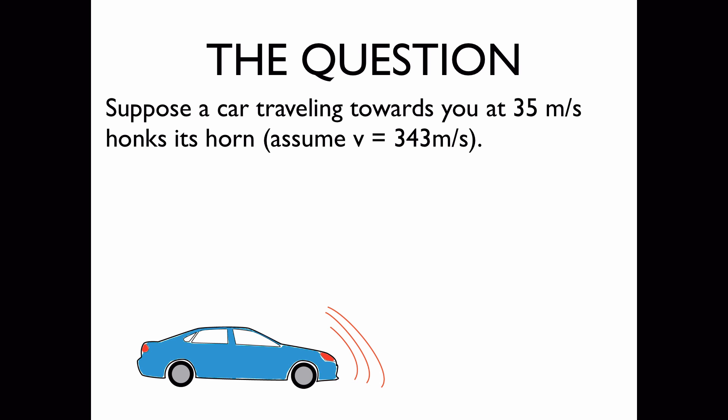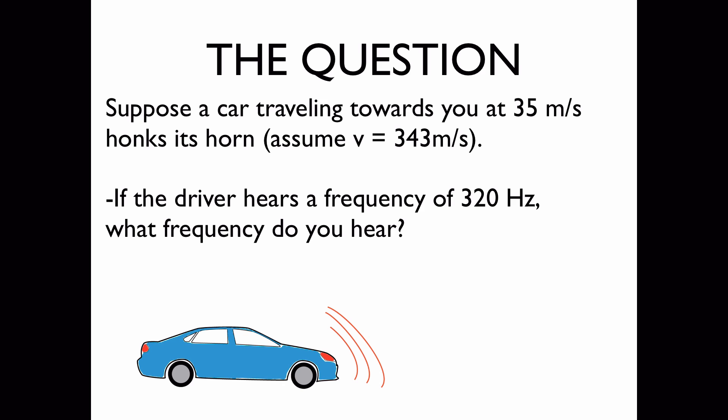Suppose a car traveling towards you at 35 meters per second honks its horn, and assume here that the speed of sound is 343 meters per second. We'd like to know, if the driver hears a frequency of 320 Hz, what frequency do you hear? And what if the car was traveling away from you instead of toward you, but away from you at the same speed?